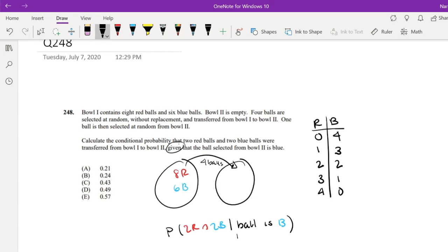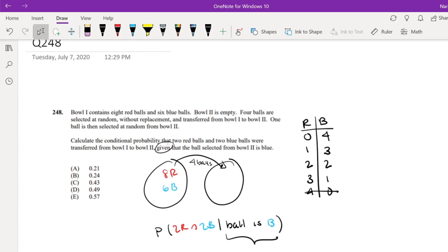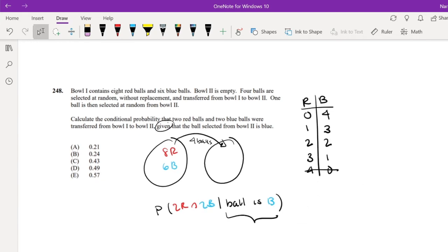But we're looking for a probability that at least one ball is blue, right? So this one can't happen. So we're looking for these probabilities.